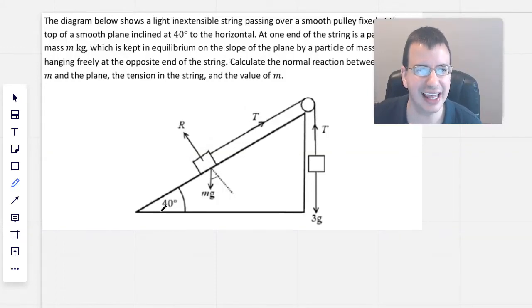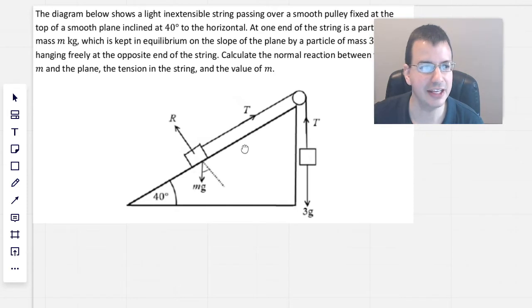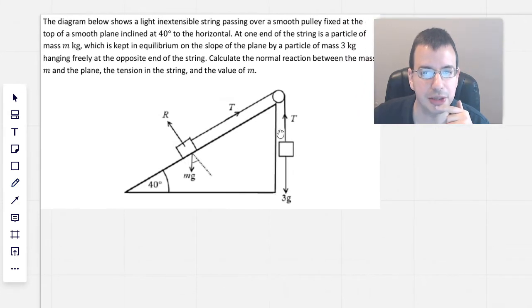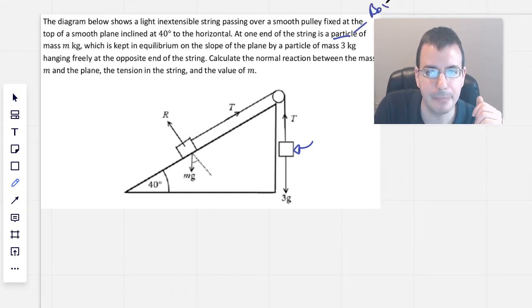The diagram below shows a light inextensible string passing over a smooth pulley fixed at the top of a smooth plane inclined at 40 degrees to the horizontal. At one end of the string is a particle. I'm going to assume that this is a particle, and I'm going to say that instead of a particle, it's a box of mass m kilograms.